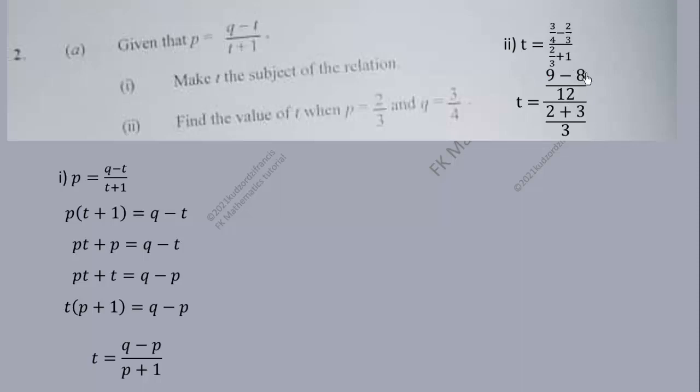Then 4 times 2 is 8, so that gives us 9 minus 8. In the denominator, the LCM is 3. 3 times 1 over 1, so 3 goes into 3 once, that will give us 3.